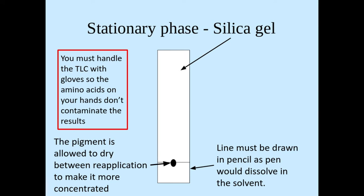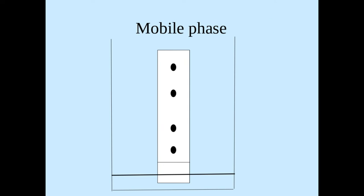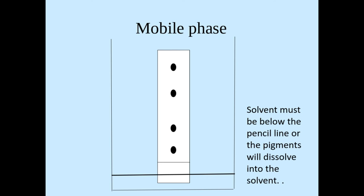What you'd then do is you put the whole of the thin layer chromatogram into a solvent and this becomes a mobile phase where the solvent will dissolve the photosynthetic pigments and take them up the chromatogram. We've got to make sure here that the solvent must be below the pencil line otherwise our pigments will just go straight down into the solvent. We want them to separate out on the chromatogram.